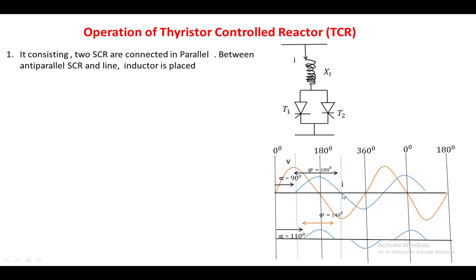T1 conducts until the current reaches its maximum and returns to zero, at which point T1 turns off. At the same instant, the triggering voltage is applied to T2, so negative current passes through the reactor. This current is purely reactive because it lags the voltage by 90 degrees.